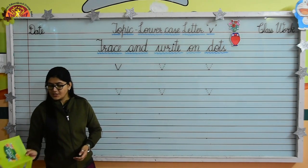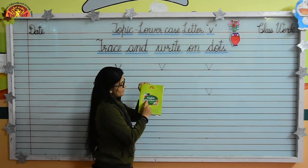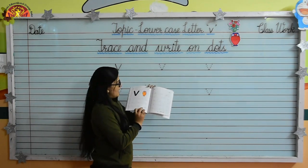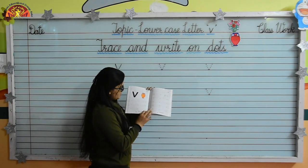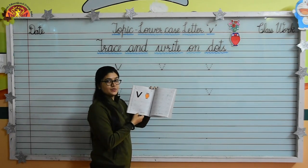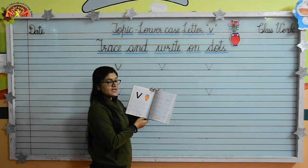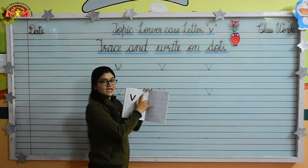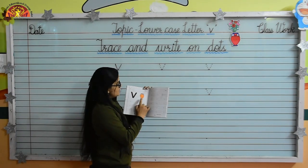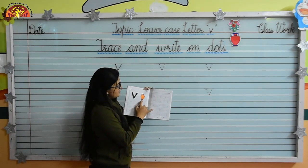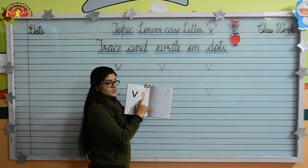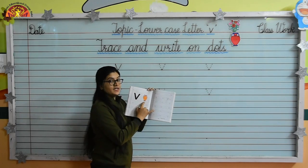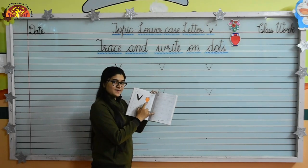Now take out your English workbook 2 and open page number 72. Parents are requested to mention date and classwork at the top. As we can see, there is a picture of a vase, so fill the color very beautifully like this.